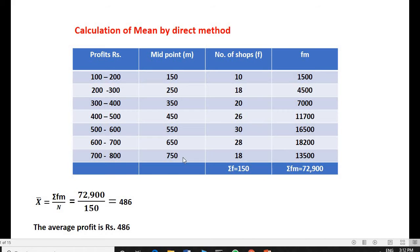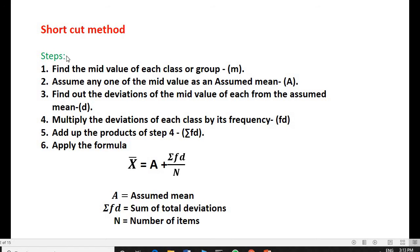Now apply the formula. Arithmetic mean x̄ = ΣfM / N. Here, ΣfM = 72,900. ΣF is nothing but N, the number of items, which is 150. So that is 72,900 divided by 150. If we simplify this, we get 486. This is the average profit. After knowing the direct method, let us now look at the shortcut method.